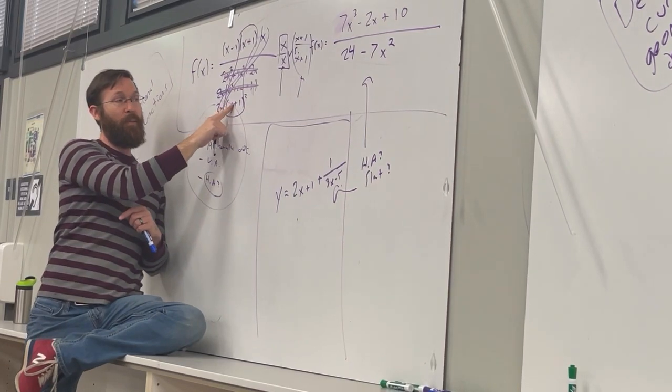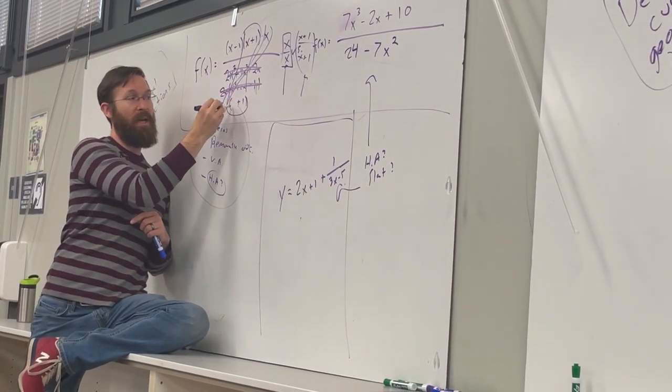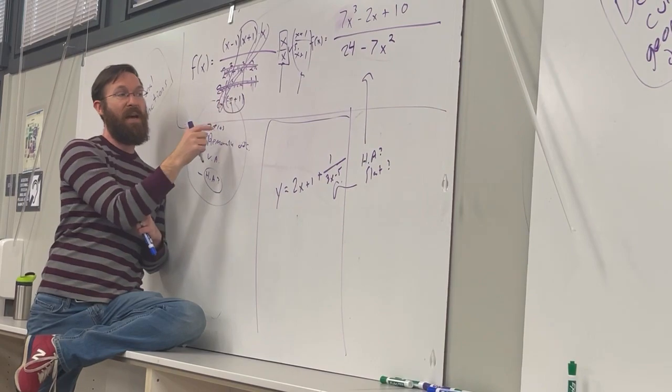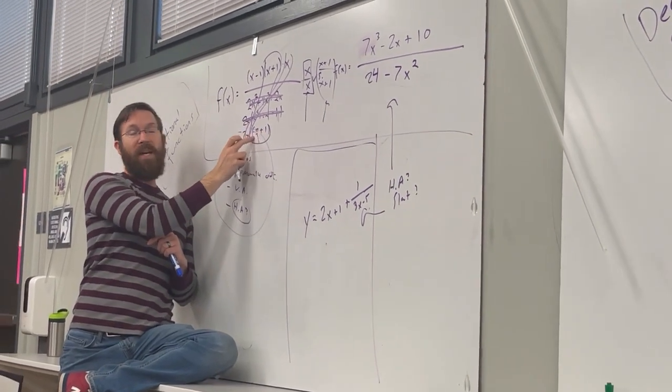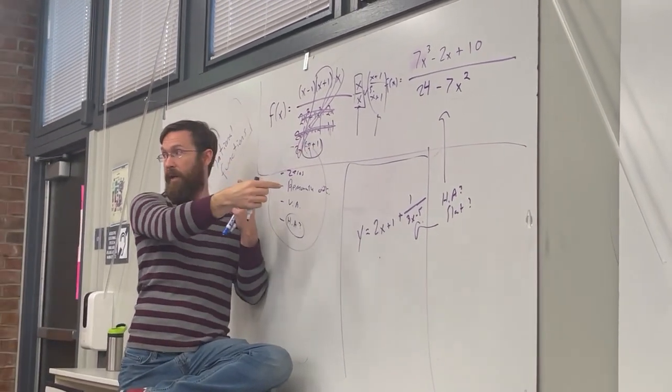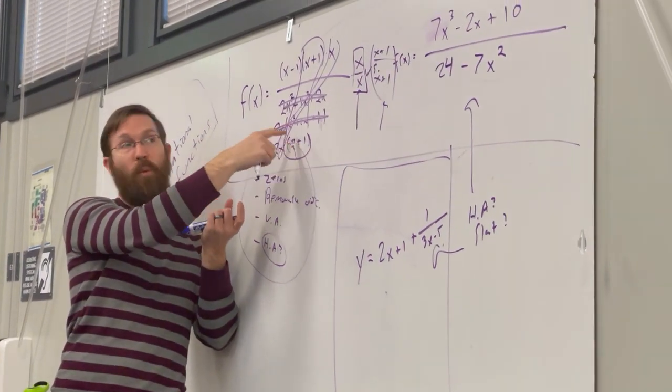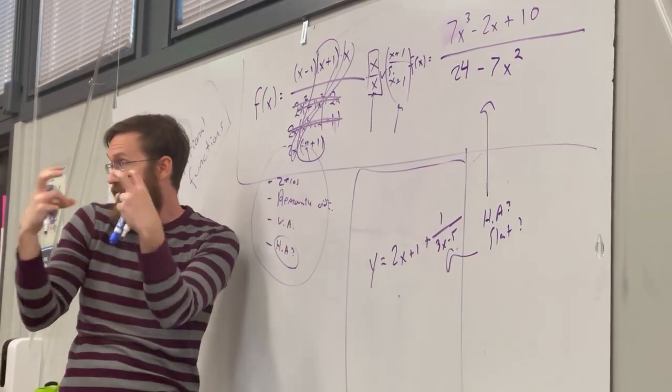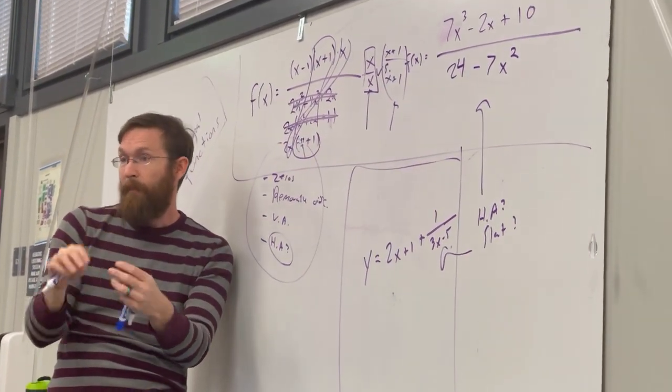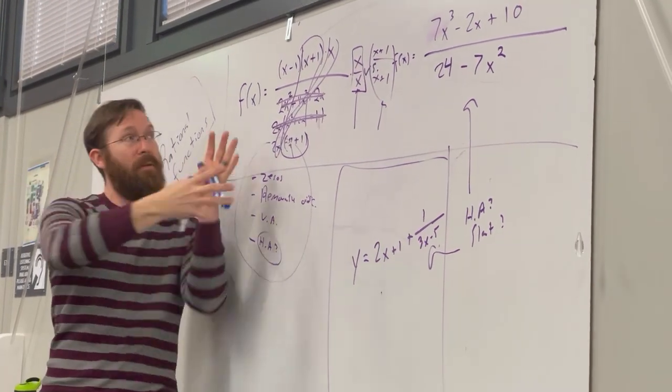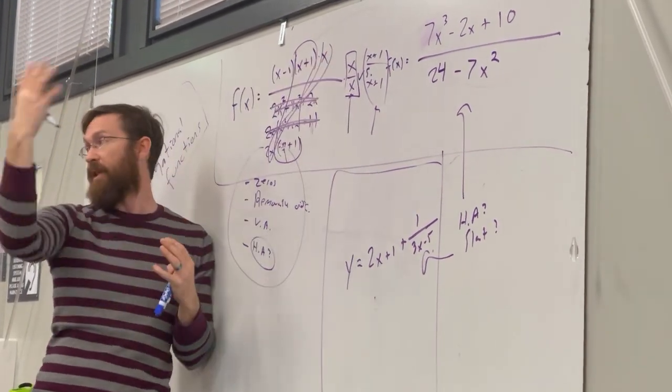Here, if I'm plugging in values that are like, imagine I plug in negative 0.99. So 1 minus 0.99 is 0.001, so a very small number. And what happens when you divide by a very, very small number, the entire y value is going to get very large.